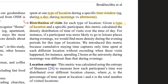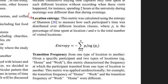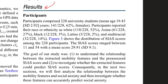The second feature group is distribution of visits: for a specific location type and participant, they compute the density distribution of time visits over time of day. Third is location entropy, inspired by Shannon's information-theoretic entropy, which measures the uniformity of location distribution. Finally, transition frequencies capture movement from one location type to another, such as going from home to work.